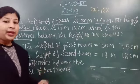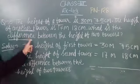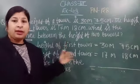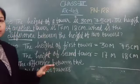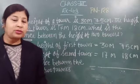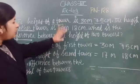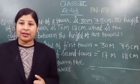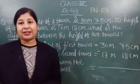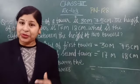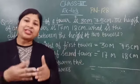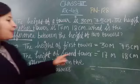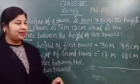हमें दोनों टावर की बीच में जो difference है height का वो find करना है। जब भी हम word problem करते हैं तो उसमें अलग से words लिखने की कोशिश मत कीजिए — जो question में दिया होता है उसी से अपनी steps बनाइए। जब difference find करते हैं तो हम subtract करते हैं, और जब किसी को merge या combine करना होता है तब हम addition करते हैं।